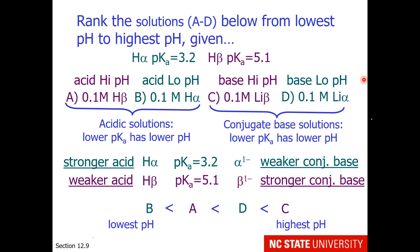So here's our final ranking. B, A, D, C. Or H-alpha, H-beta, alpha minus, beta minus. So this completes chapter 12.